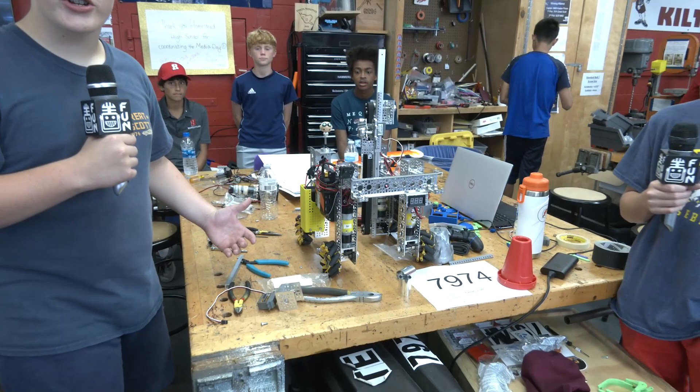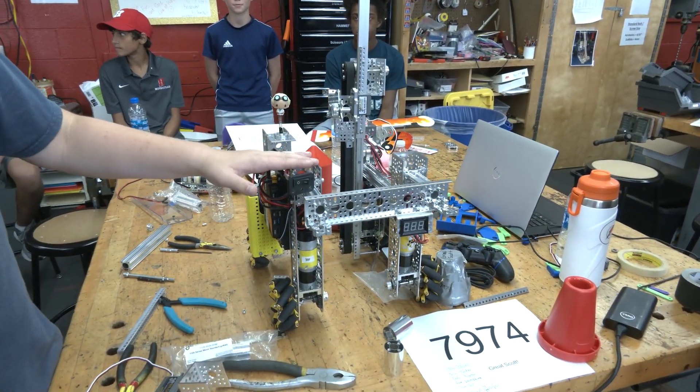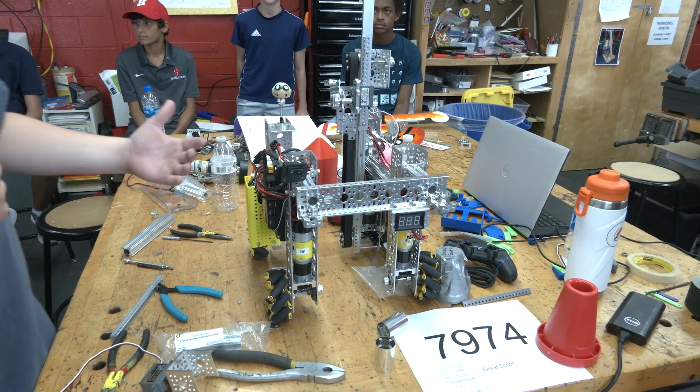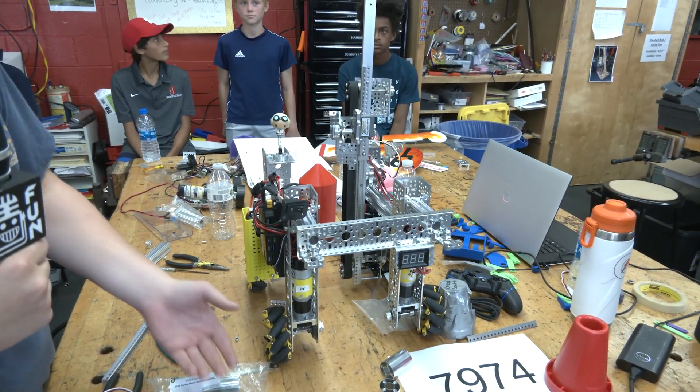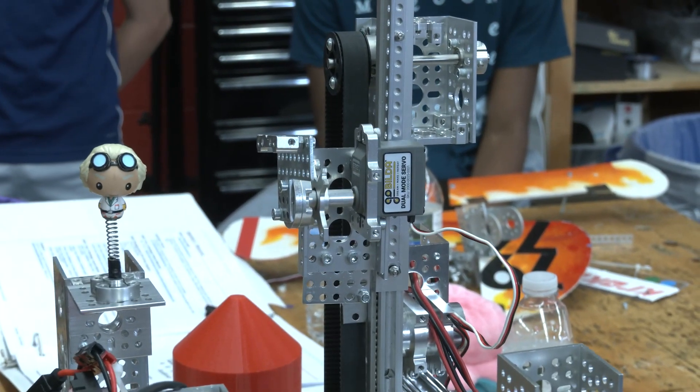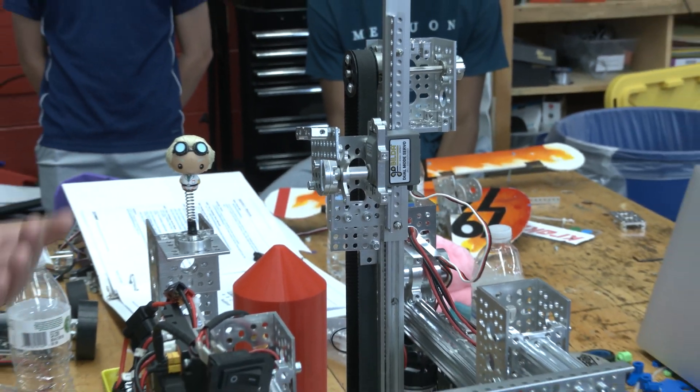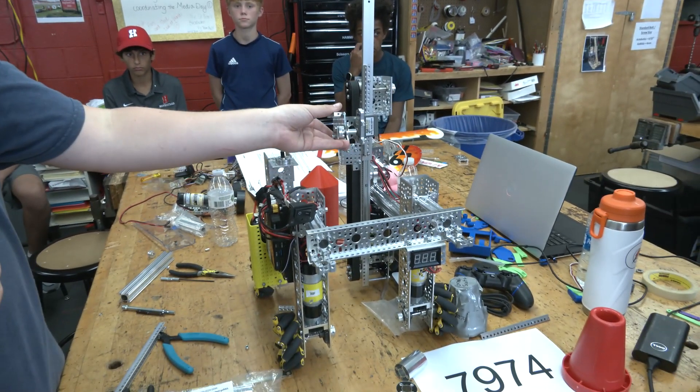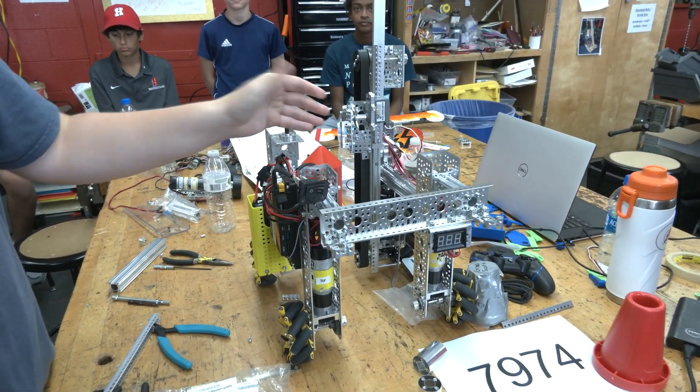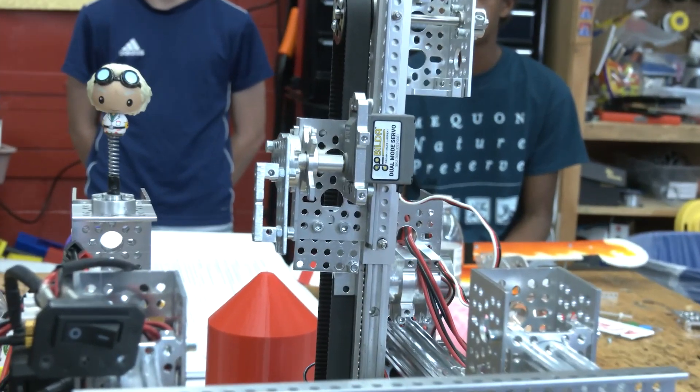So our current strategy as you see here is this is our drivetrain from last year which we're reusing. Our freight frenzy system essentially was an active intake and bucket that we then raised. Now given that we're also raising things on the field during this challenge, PowerPlay, we've decided to reuse our system for the lift but instead use a claw to pick up and place the objects.